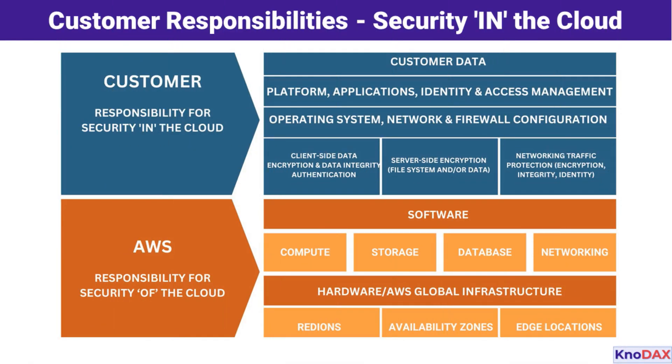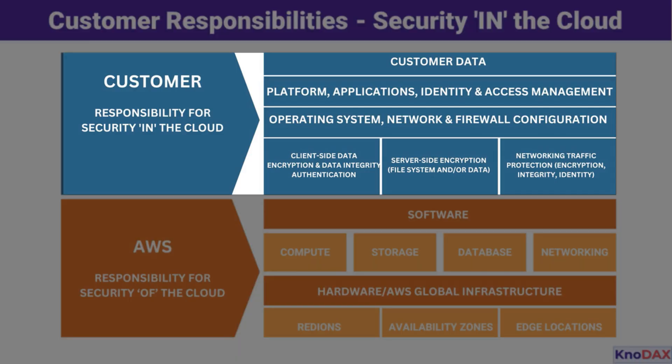Now let's shift to your part of the responsibility: security in the cloud. This includes everything you deploy, manage, and configure in AWS. Key responsibilities include customer data — securing the data you store, process, and transfer; applications and platforms — ensuring proper design, development, and deployment of your workloads; identity and access management (IAM) — controlling who can access your systems and resources; operating system configurations — patching, updating, and managing the OS running on your instances; encryption — protecting data in transit and at rest with methods such as client-side or server-side encryption; and network and firewall rules — setting up security groups, network access control lists (ACLs), and other firewall configurations.